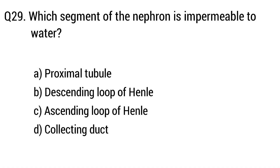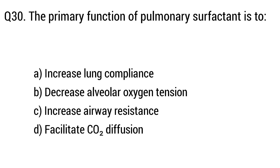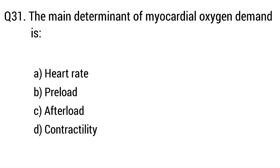Question 29. Which segment of the nephron is impermeable to water? The right answer is Option C: Ascending loop of Henle. Question 30. The primary function of pulmonary surfactant — the right answer is Option A: Increased lung compliance.